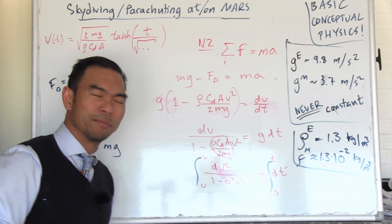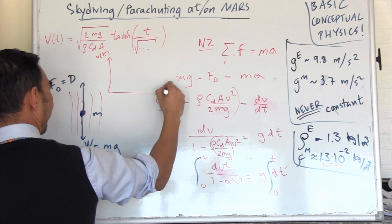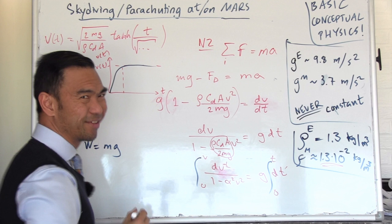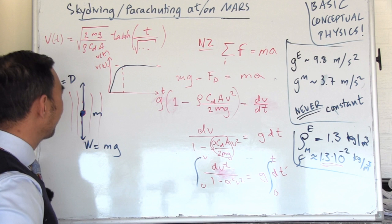V as a function of t would be terminal velocity, which involves square root of 2mg divided by rho CD A, and then hyperbolic tan, which looks like this. If you're using a plotting program, just plot it. It's pretty easy. You will see that v as a function of t will look like this, and it will approach very fast.